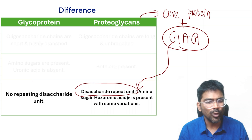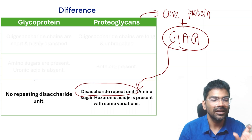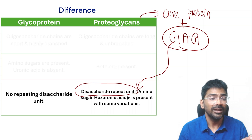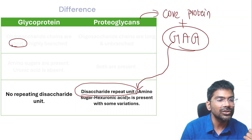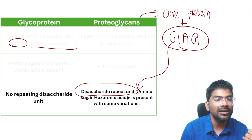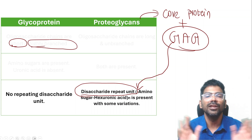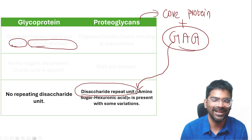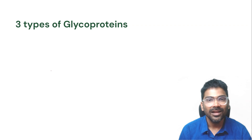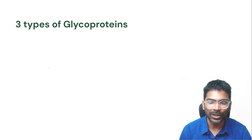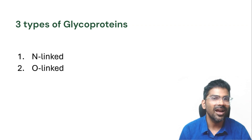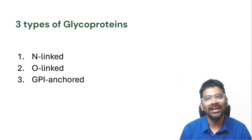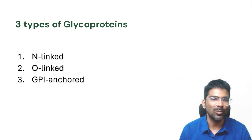In glycoproteins, there is no such repeating disaccharide unit. The carbohydrate portion in a glycoprotein consists of short and highly branched oligosaccharides. There are three types of glycoproteins: N-linked, O-linked, and GPI-anchored glycoproteins.